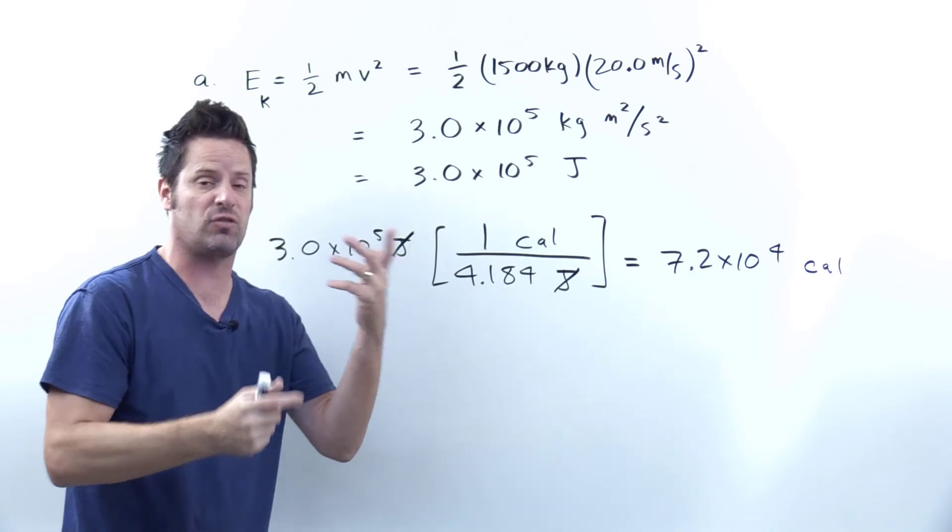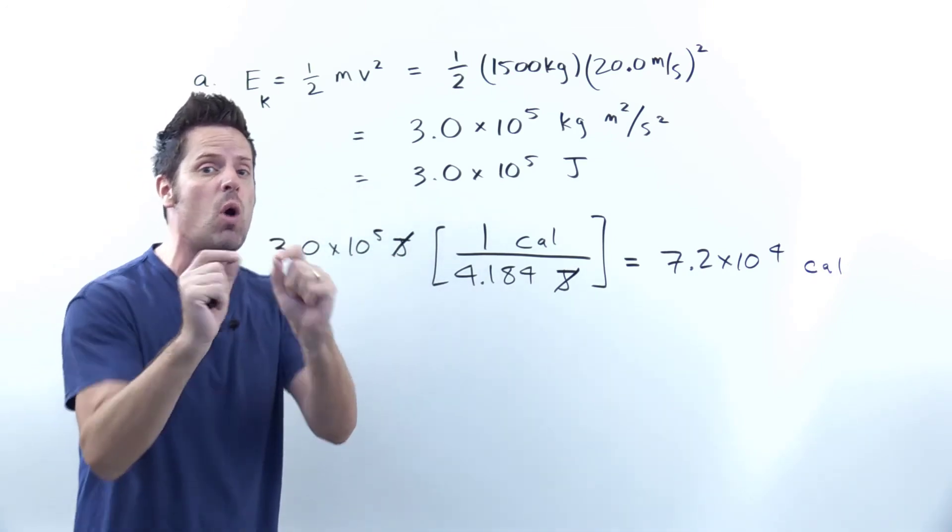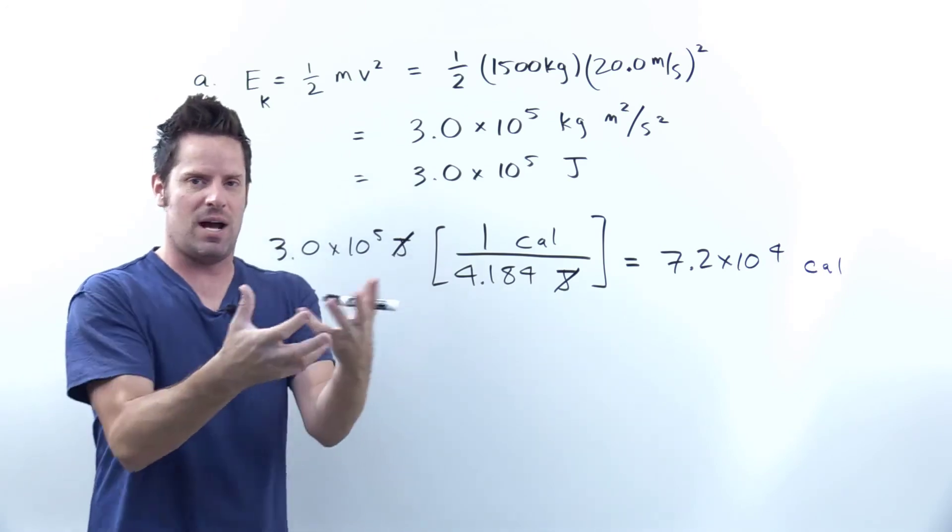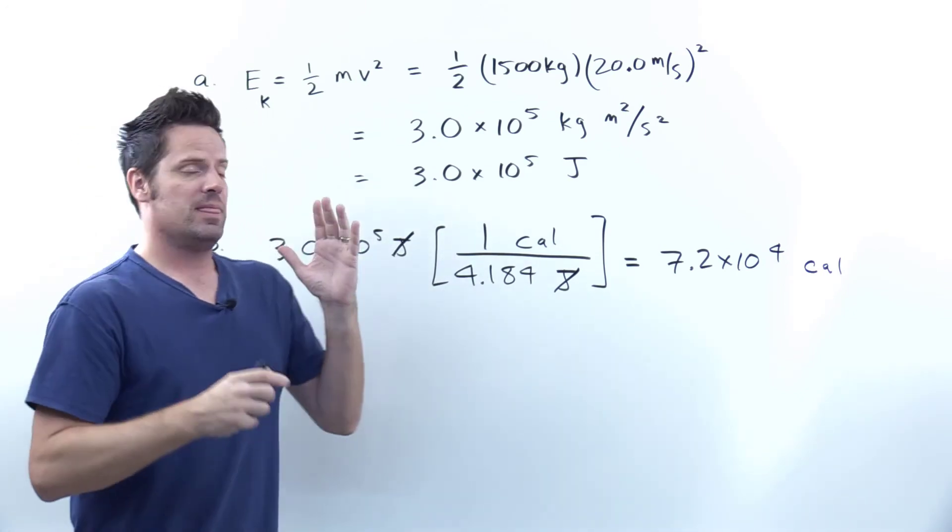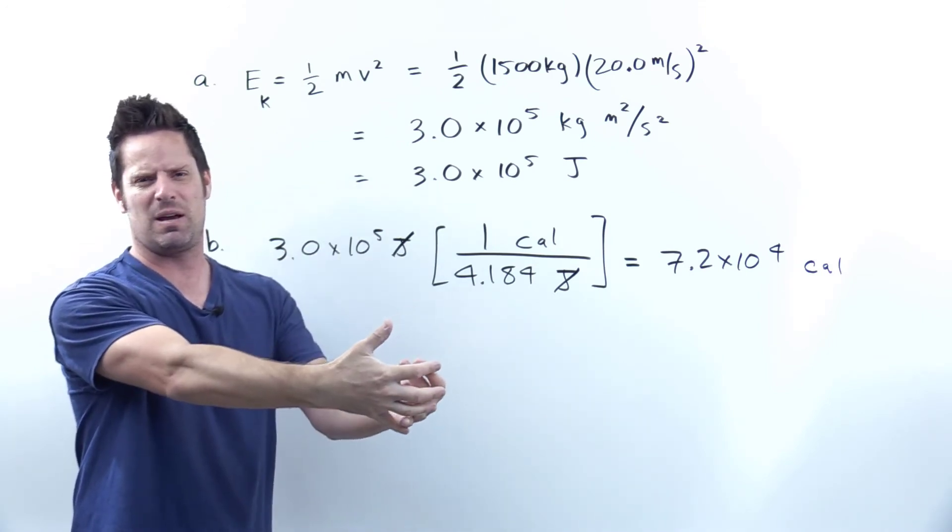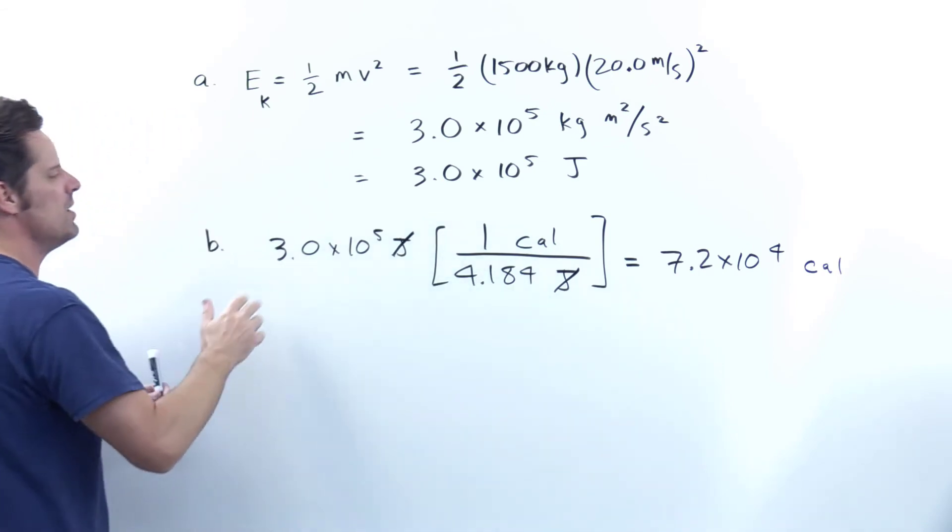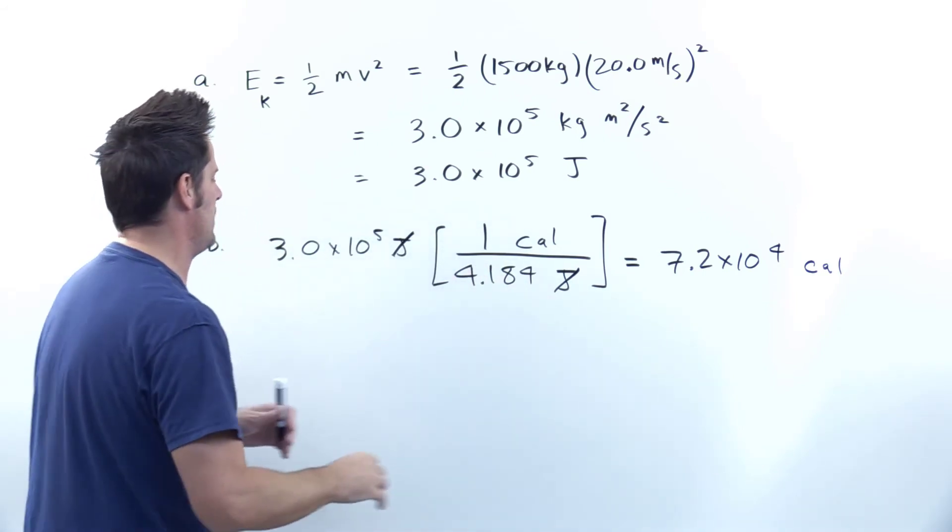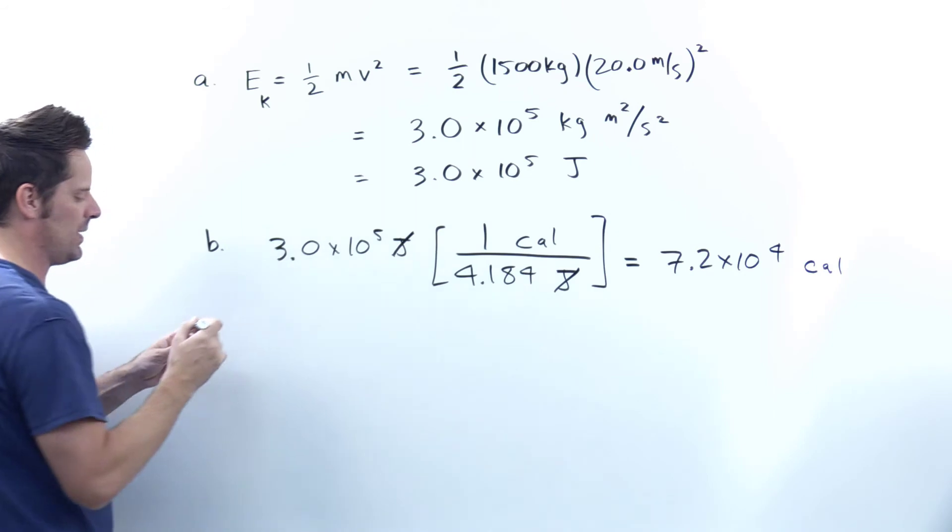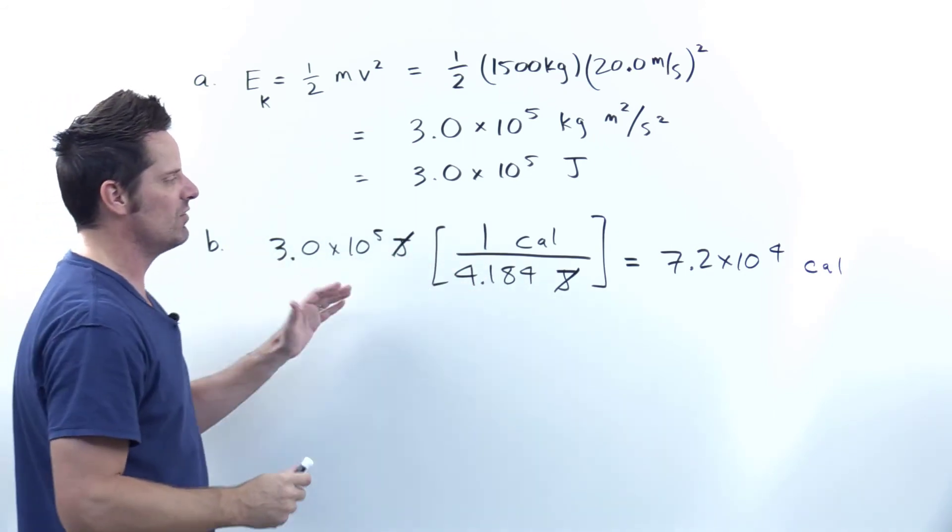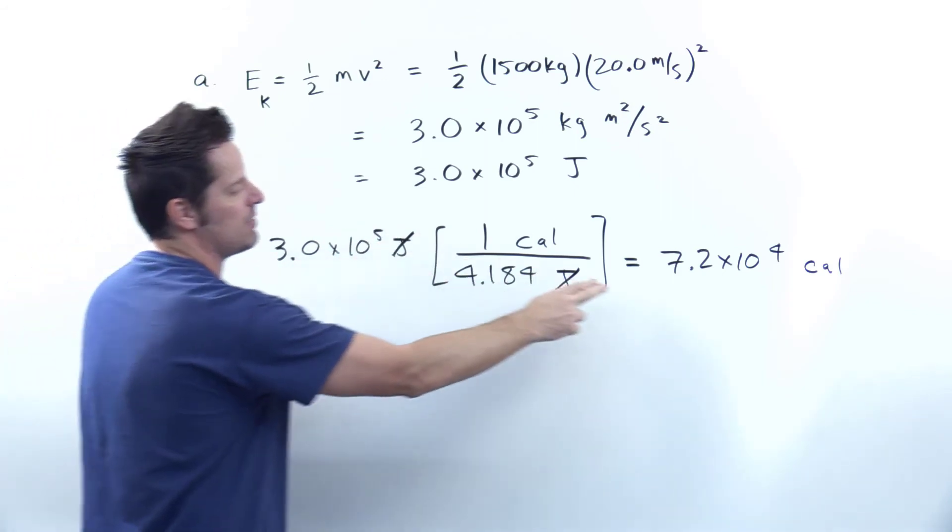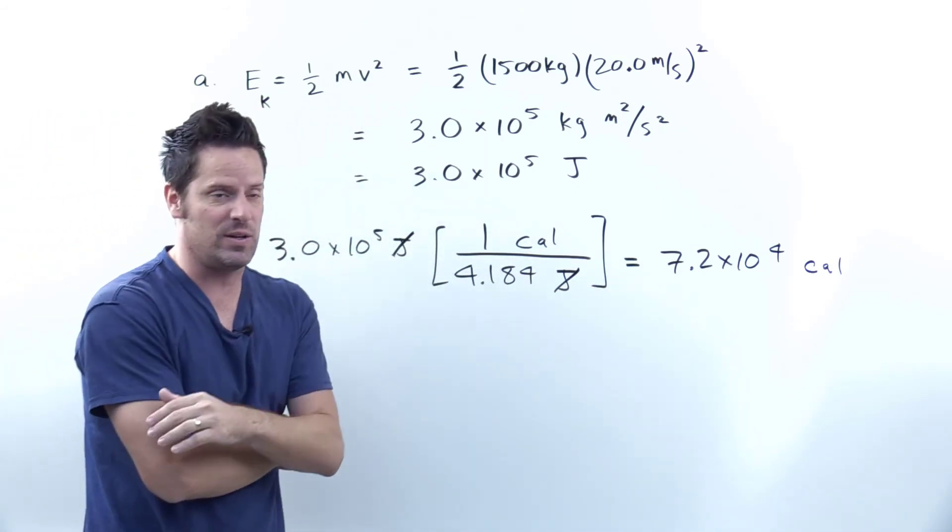Now part B asks us to convert that joules or that answer for part A into calories, which is lowercase calories, not to be confused with uppercase letter C calories, which I guess I'd pronounce as calories because it has an uppercase. I don't know. Anyway, the uppercase calories is the calories that we see in the nutritional information on the side of like a package of food that we buy. Anyway, this is the lowercase calories. So the inner conversion between these, by the way, as I stated earlier, is 4.184 joules in one lowercase calorie. So I take the value that I got in A, which is 3.0 times 10 to the fifth joules. I use dimensional analysis slash unit conversion to convert into calories and rounded to the proper number of sig figs, which is two, because this term only has two sig figs. I come to 7.2 times 10 to the fourth calories, lowercase calories.